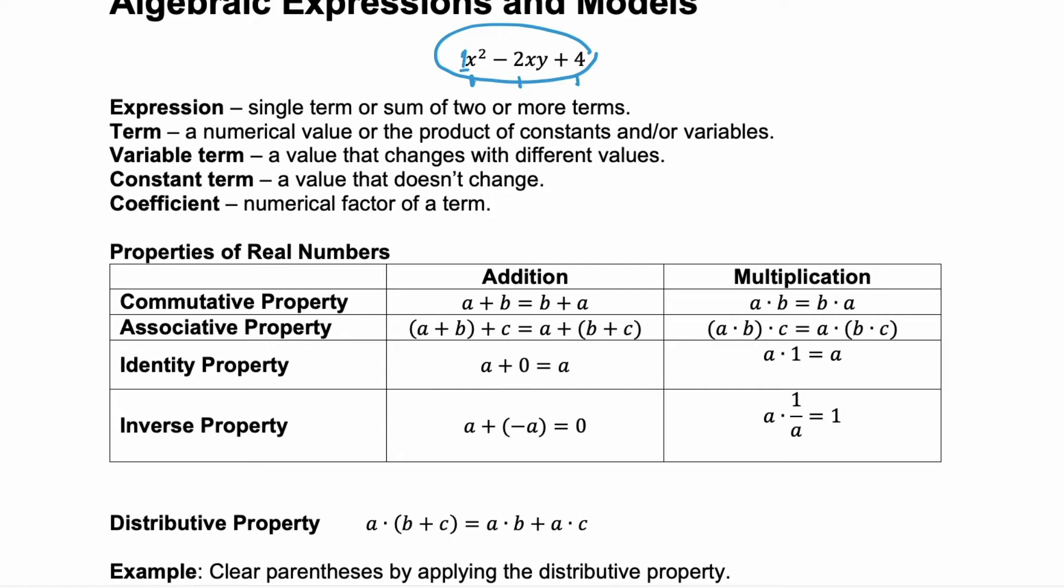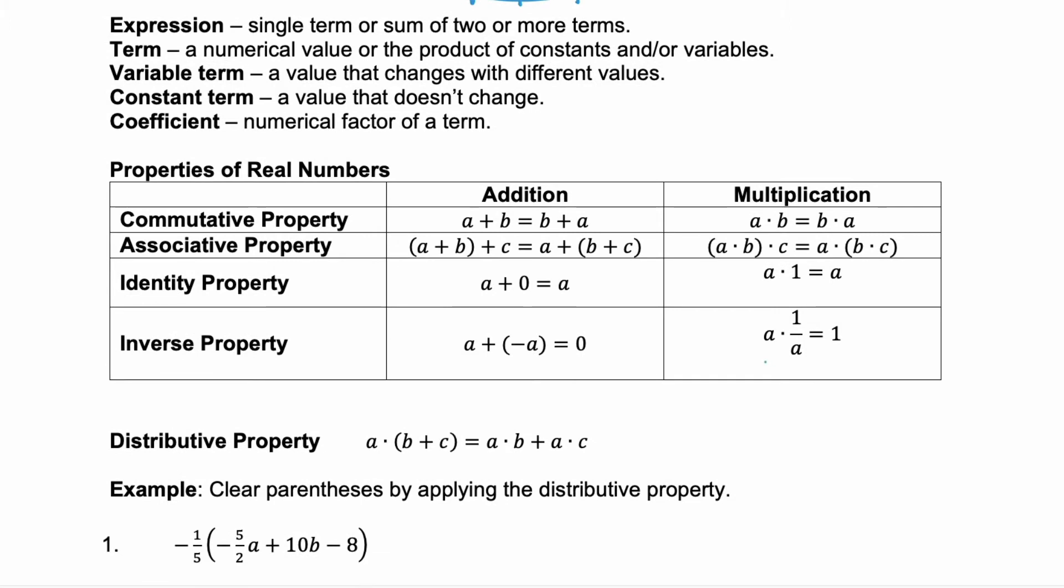And then we have the inverse property. When you add the inverse or the opposite of a value you get 0. And when you multiply by the inverse so a times its reciprocal 1 over a you get 1.